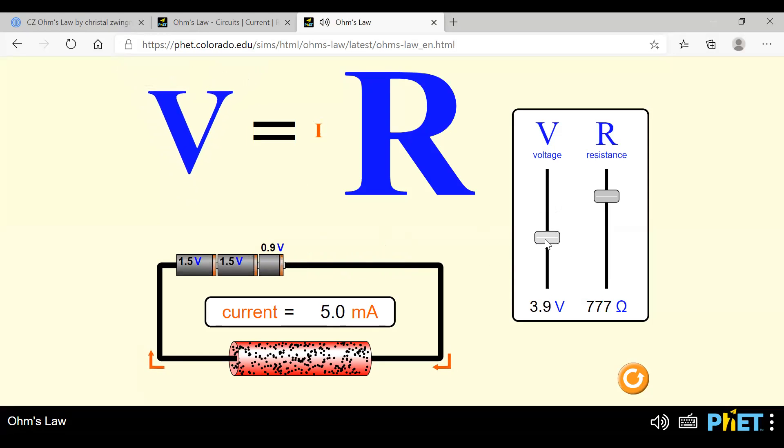From 5.9 milliampere, it is coming to 5. It is coming down again to 3.3, which means potential and current are directly proportional. Or if I keep the voltage constant, let us see when resistance decrease, what happens to current?